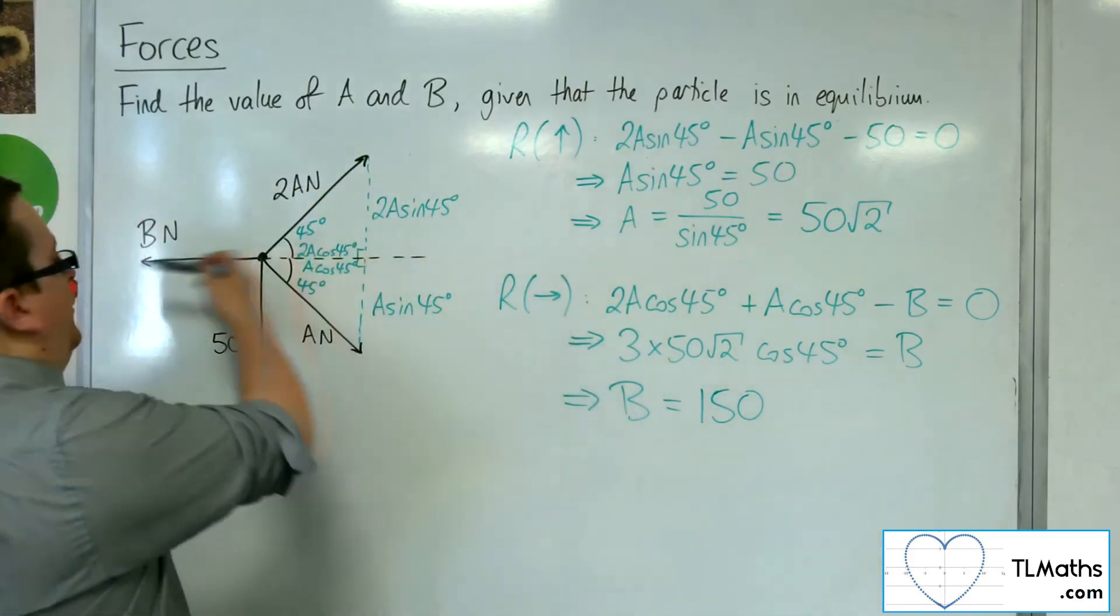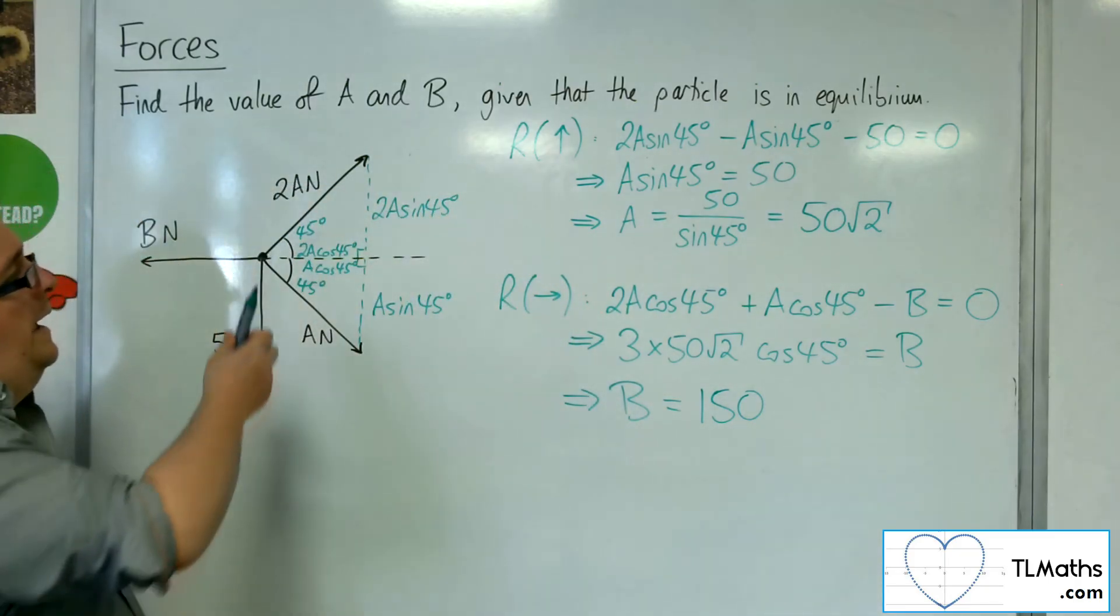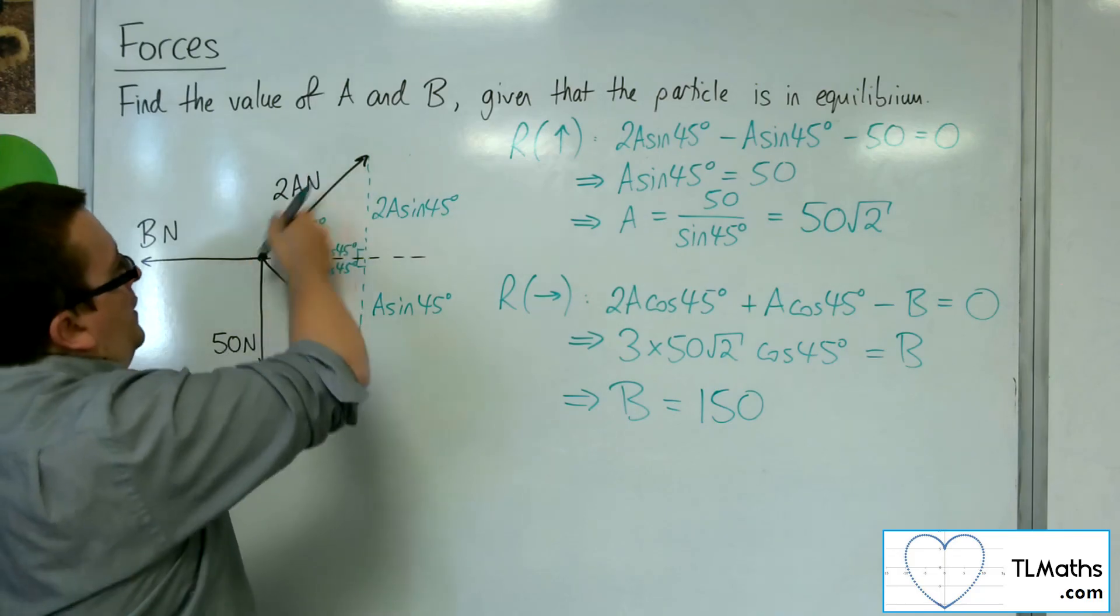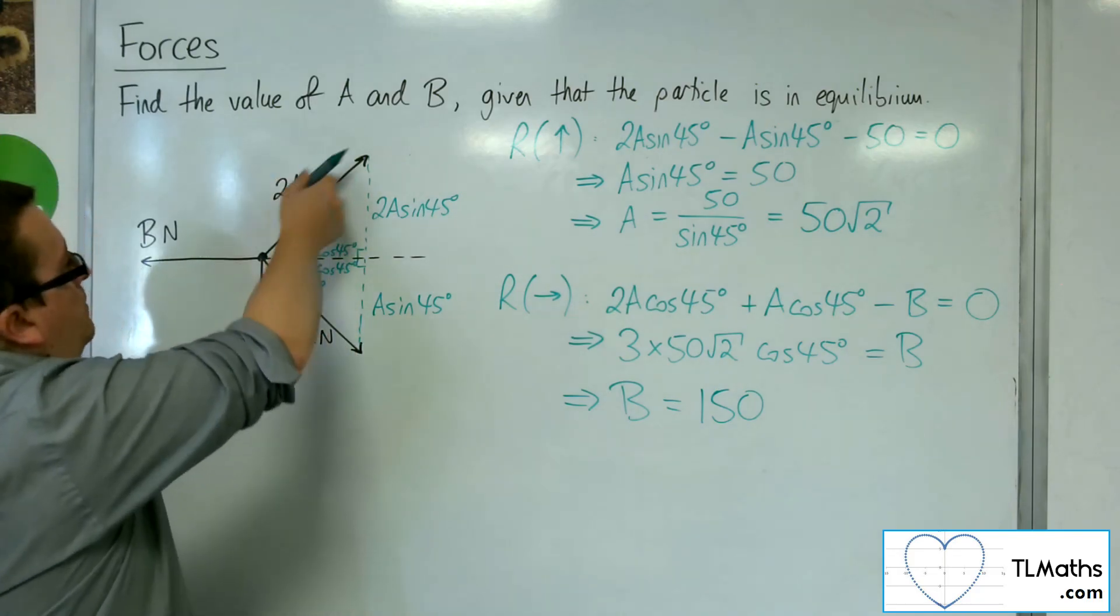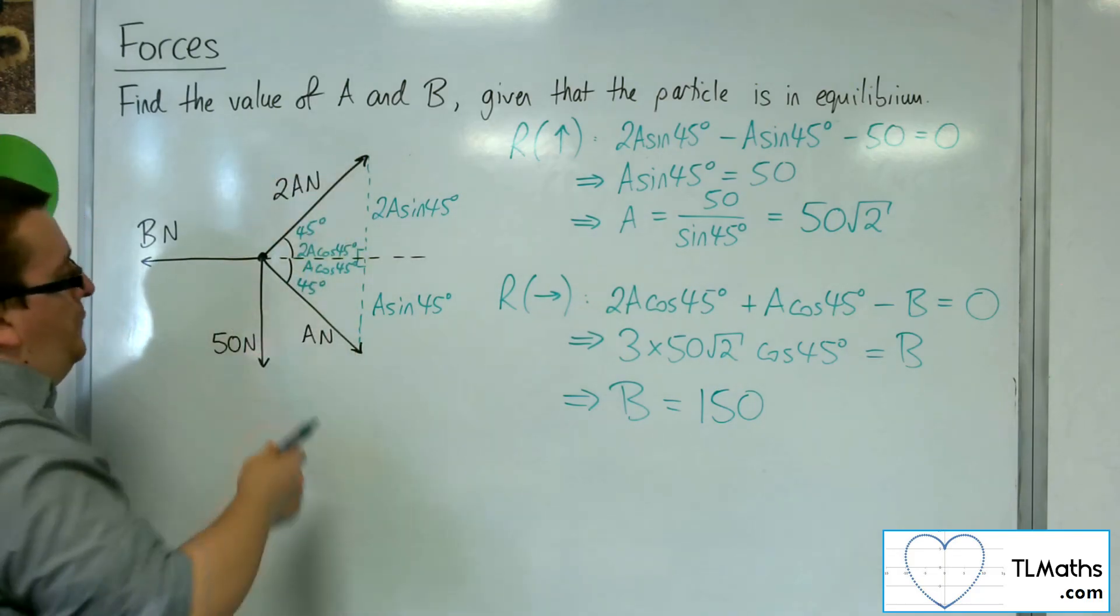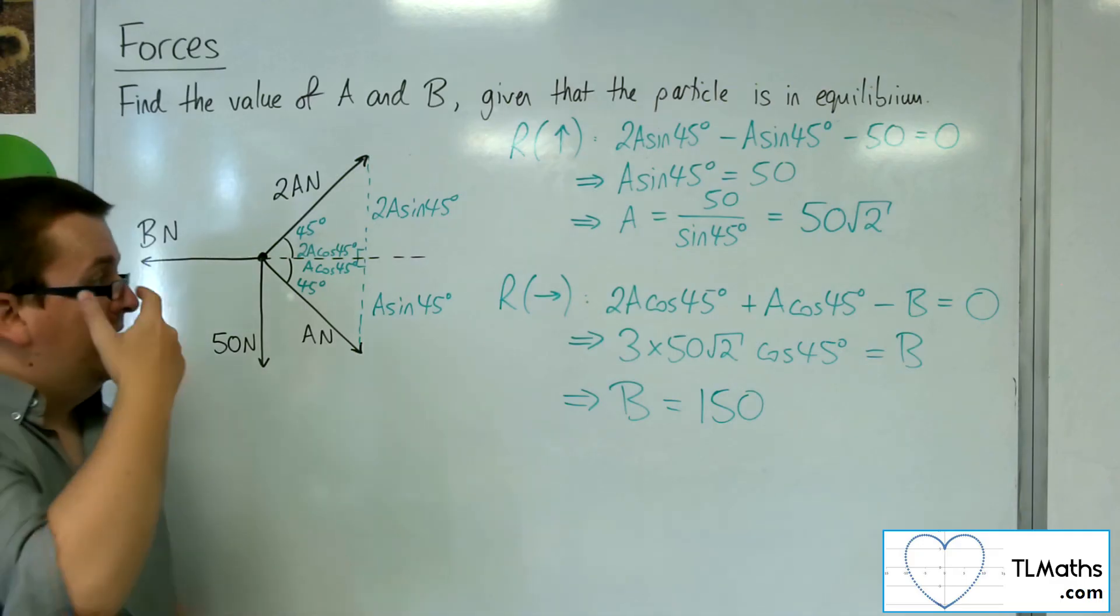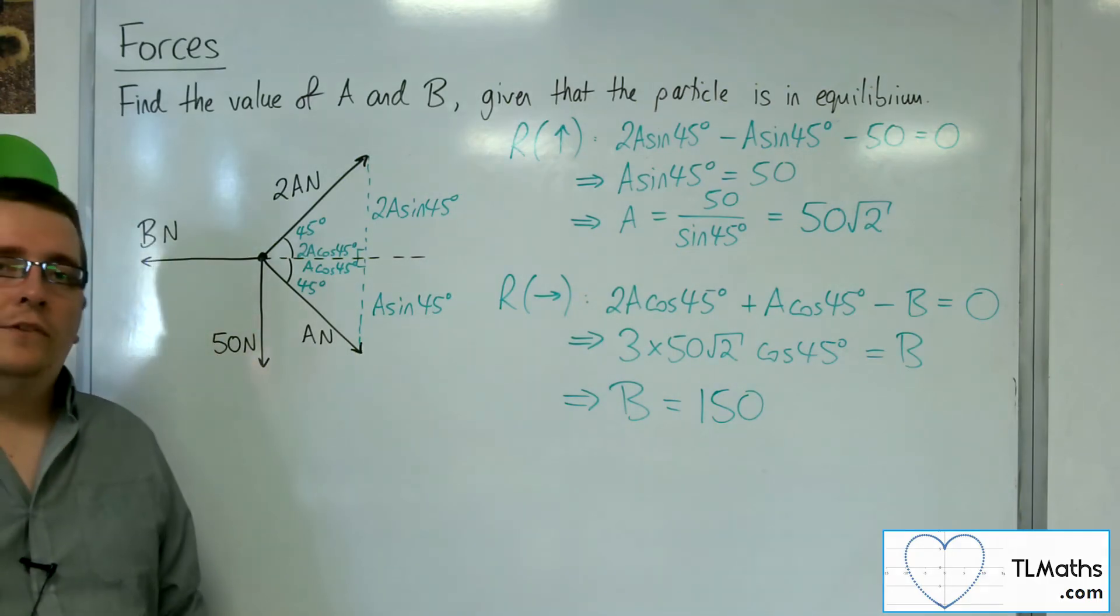So this force is 150 newtons. The magnitude of that force is 100 root 2 newtons. And that one's 50 root 2 newtons. So that's how I can find A and B in this case.